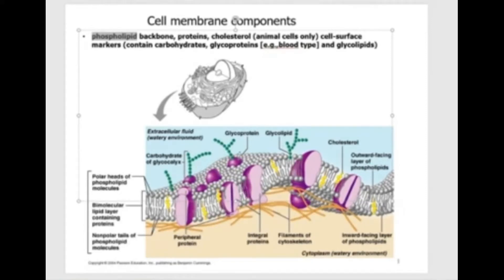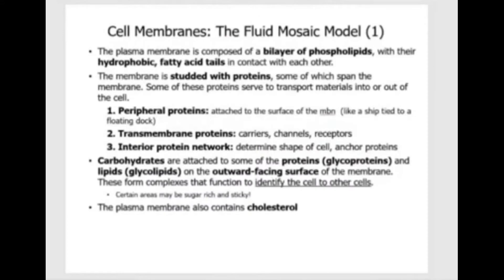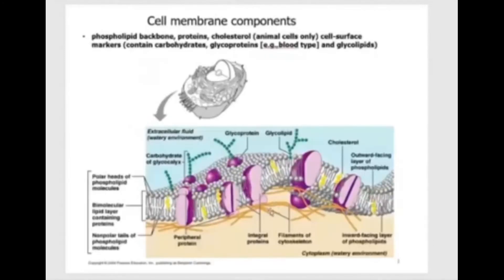There are proteins embedded in the cell membrane. The first type is peripheral proteins. These proteins are usually attached to the surface of the membrane — kind of like a ship tied to a floating dock. They're located on the surface, almost like they're anchored to it.